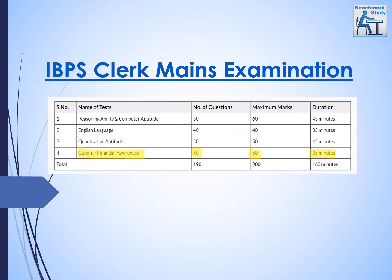First let's discuss what is the pattern of IBPS Clerk Mains examination. As you know, there are 4 components in this: reasoning, computer, English language, quantitative aptitude, and general and financial awareness. If you talk about reasoning and computer, you have 50 questions worth 60 marks, and you get 45 minutes for this section.